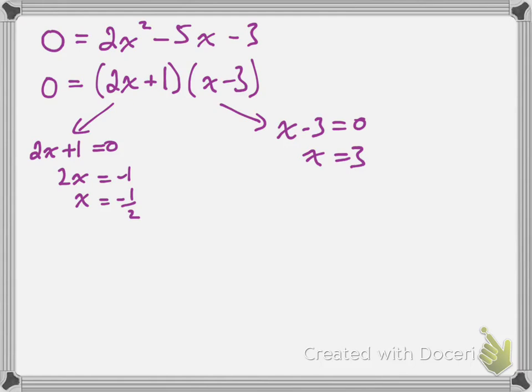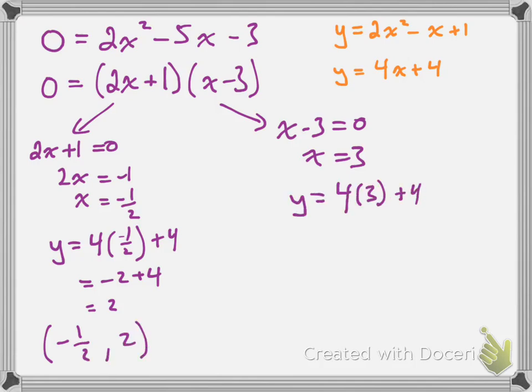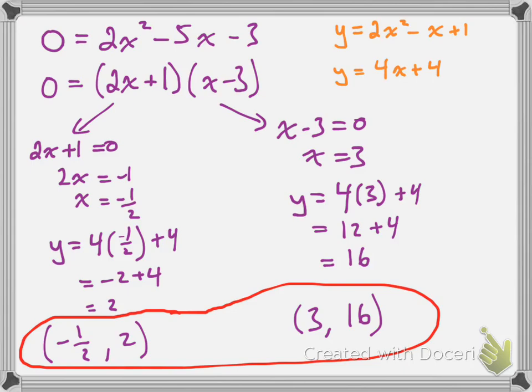To find the actual points of intersection, I substitute these x values back into one of my original equations — y equals 2x squared minus x plus 1 or y equals 4x plus 4. I suggest using the line because the math is easier. Substituting x equals negative 1/2: y equals 4 times negative 1/2 plus 4, giving y equals 2 — so one point is (−1/2, 2). Substituting x equals 3: y equals 4 times 3 plus 4, giving y equals 16 — so the second point is (3, 16).